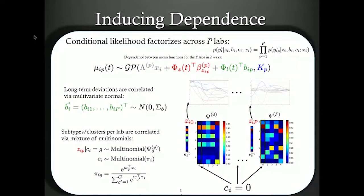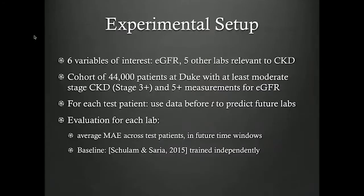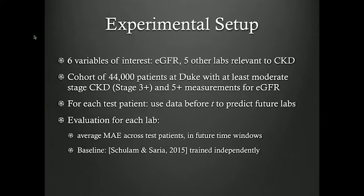In this way, we're basically correlating all of the individual lab trajectories that a person has. We ran this experiment using Duke data, looking at six variables of interest: EGFR — the measure of kidney functioning — and five other lab values all related to chronic kidney disease. We looked at a cohort of 44,000 patients at Duke with at least moderate chronic kidney disease and a bunch of EGFR measures. Having a measure for EGFR mostly depends on having a creatinine lab taken, which is a very common lab test.